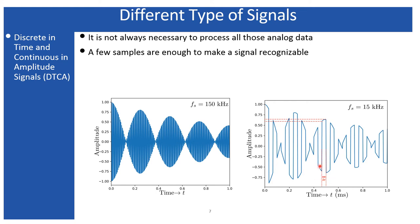Between time intervals the amplitudes are absent, but within any given interval the amplitude still contains an infinite number of points. However, the total data points are fewer than the original analog signal since we are not considering all times. This DTCA signal is obtained by multiplying square wave pulses with the original analog signal.